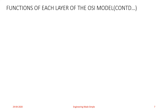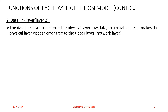Now we will study the functions of the Data Link layer. The Data Link layer transforms the Physical layer's raw data to a reliable link. It makes the Physical layer appear error-free to the upper layer, i.e., the Network layer. Whenever the Data Link layer receives a data packet from the Physical layer, it consists of only data bits, and there might be some errors in them.